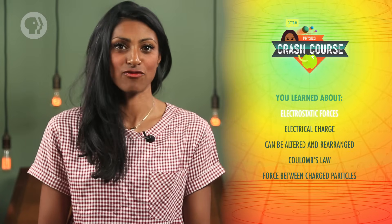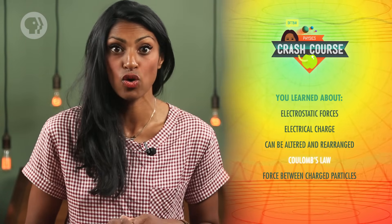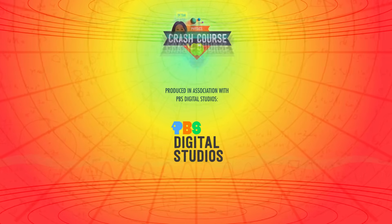So from a simple trick with tape and the help of a couple of animated rods, we've already uncovered the basics of electrostatic forces. Next time, we'll learn about electric fields and how to visualize their effect on neighboring objects. Today we learned about electrostatic forces and how electrical charge can be altered and rearranged. We also discussed Coulomb's law and how the force between charged particles is calculated using vectors.